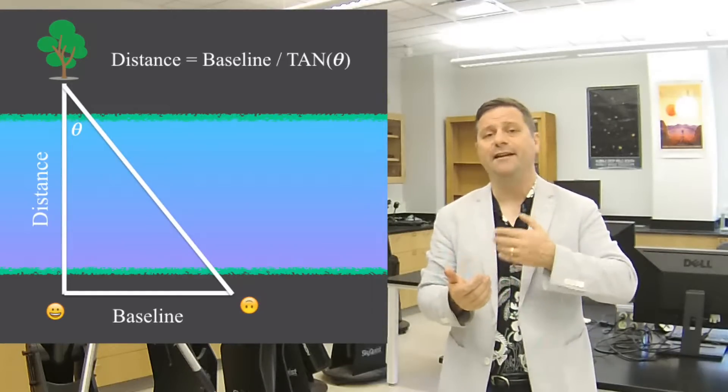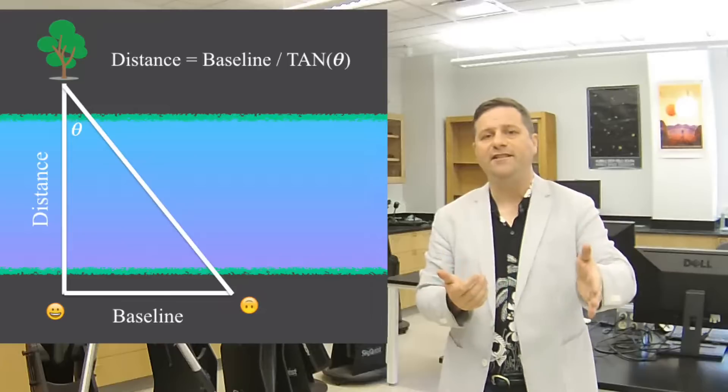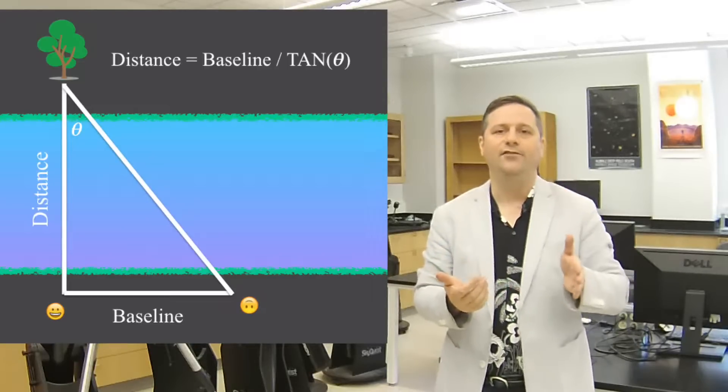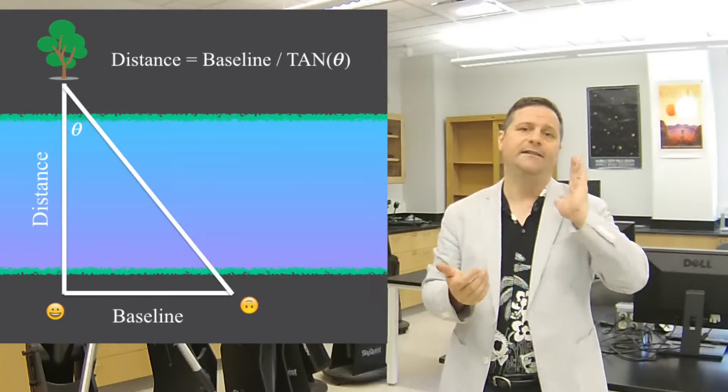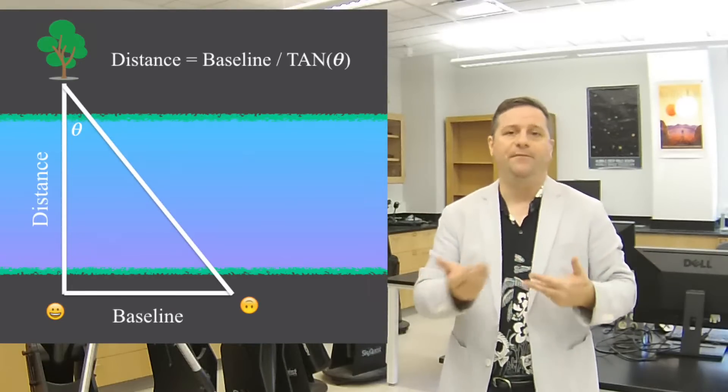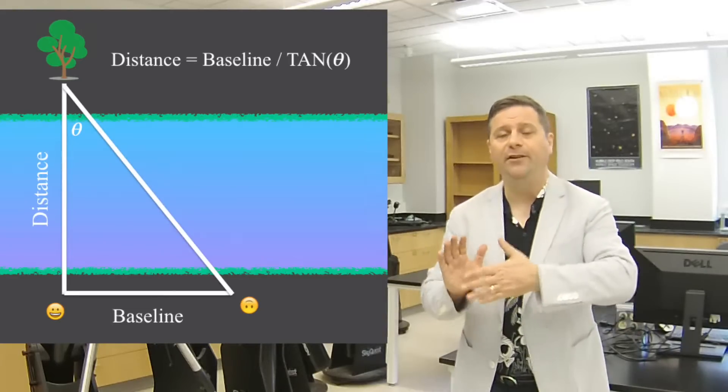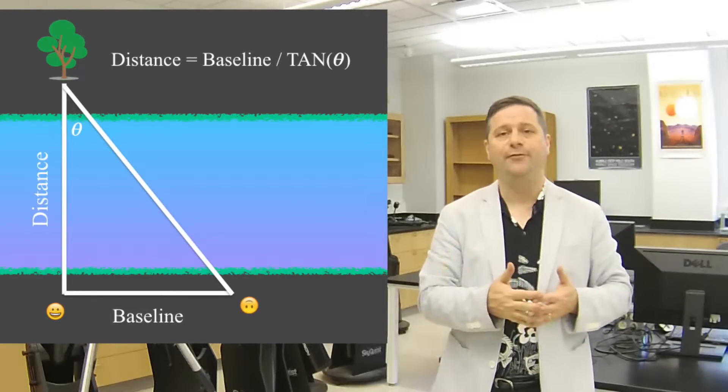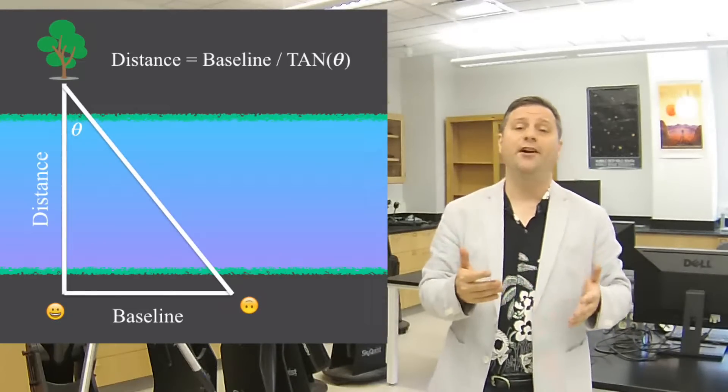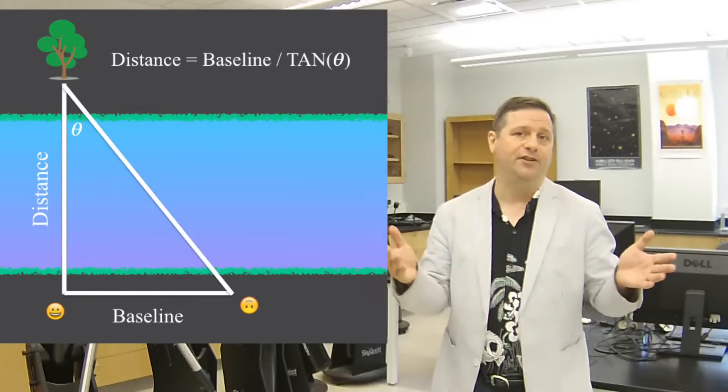We use simple ninth grade geometry and trigonometry. The baseline divided by the distance across the river equals the tangent of the little angle that subtends the two sight lines. That's the opposite over the adjacent. Therefore the distance across is simply the baseline divided by the tangent of that little angle which might be five degrees.